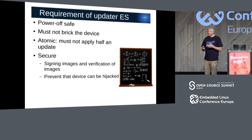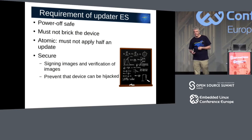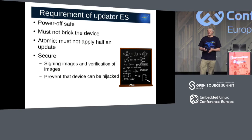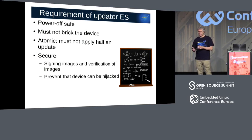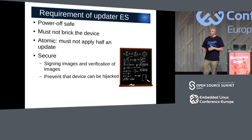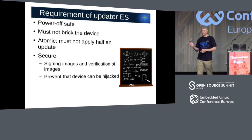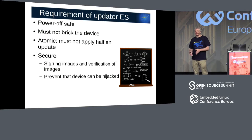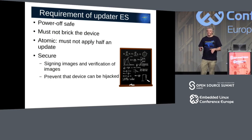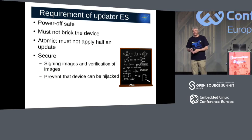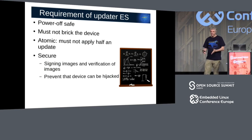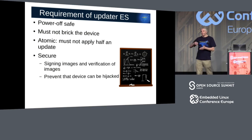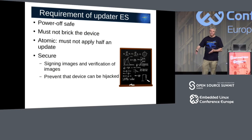Another important feature an update agent must have is verification of the update package. It should be verified that the update package comes from a trusted source — not that anyone has changed something, pushed it to our device, and our device accepts it. Of course, this requires more investigation — it's not just the update, it's also part of secure boot. But if we don't have a secure update, even if we have secure boot, we haven't closed the circle, because we update the system and after a new boot the system is broken.